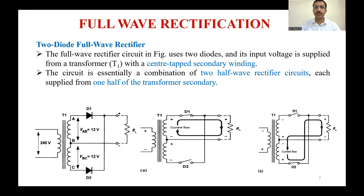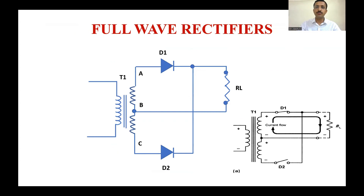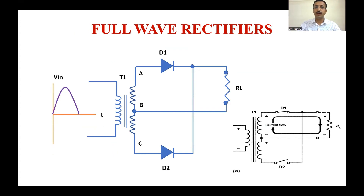In the positive half cycle, D1 goes into forward bias and the current flow is as shown in figure A. D1 is forward biased and D2 is reverse biased. As a result, the flow of current takes place through the load resistance RL and D1 acts as a closed switch.